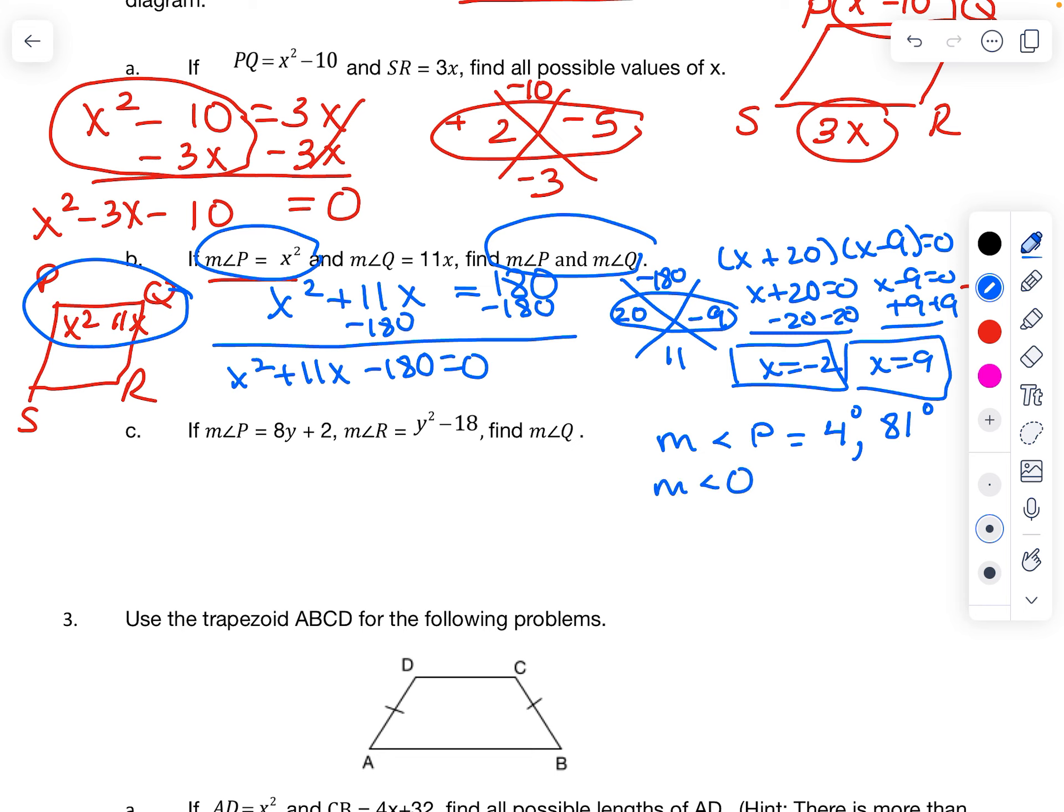Measure of angle Q. But notice that Q is 11x. So if you do 11 times negative 2, you're going to get a negative number. So this negative 2 actually can't exist because it doesn't make sense to make an angle negative. So that means you really can't use that for this one either. So 81 is the only one there. So now if I plug in the 9, I get 99 degrees. So those are your only angles.